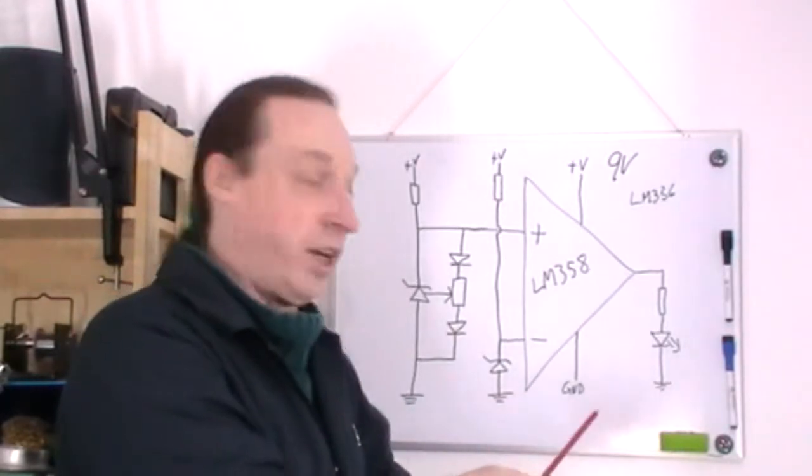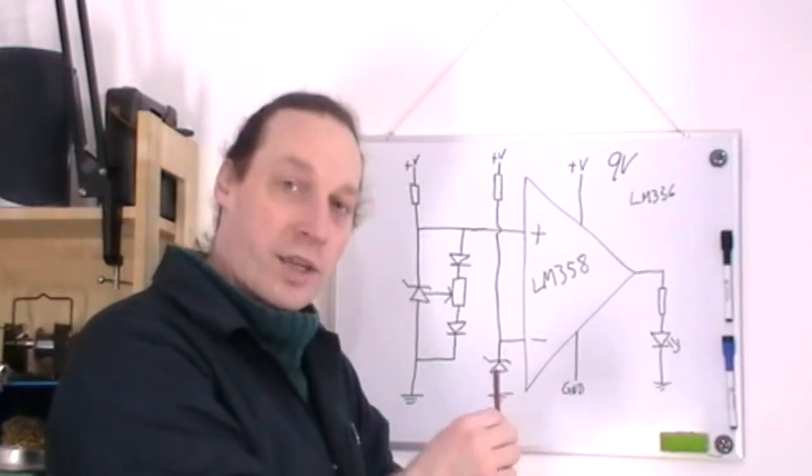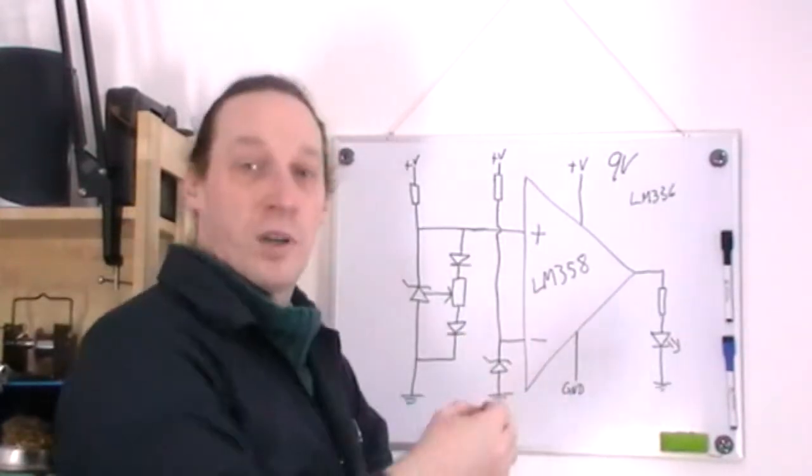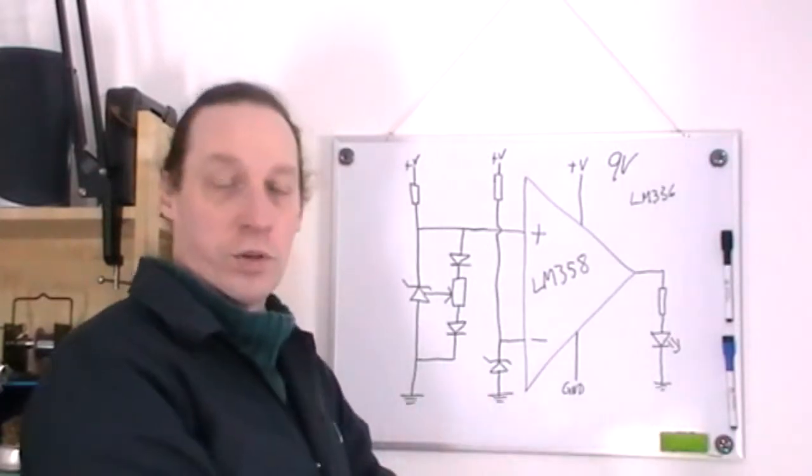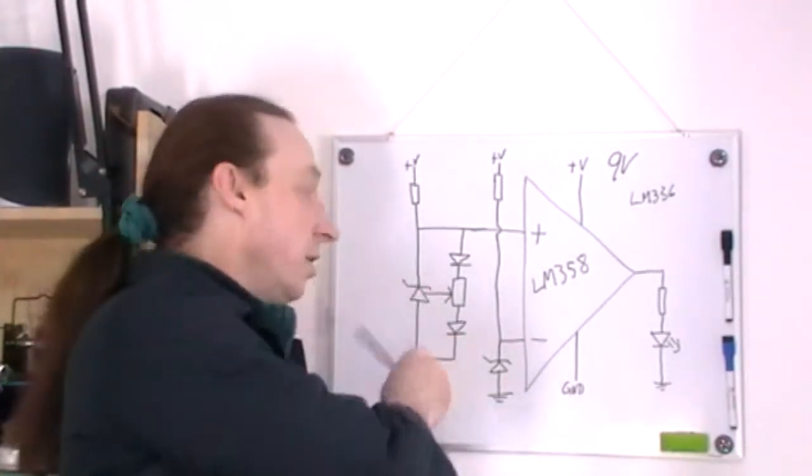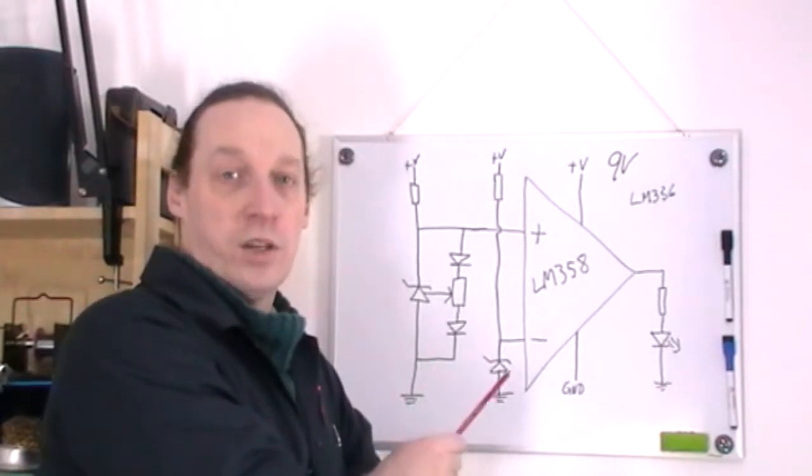I'm using it just like a Zener diode and my inverting input will give me that and then on the non-inverting input up here I'm going to put the 5 volt reference LM336.